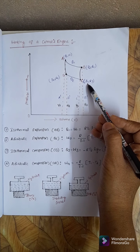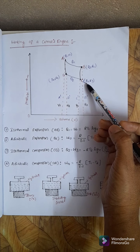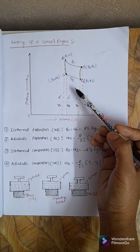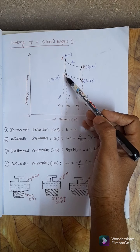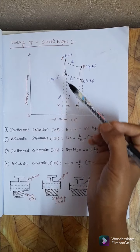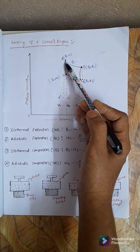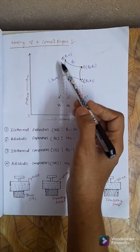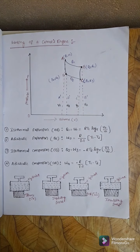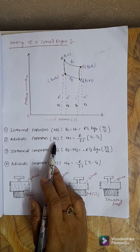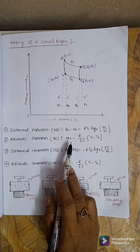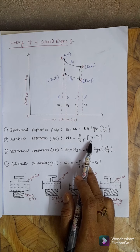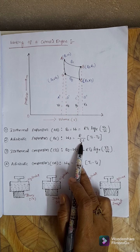Due to the decrease in pressure and temperature, the engine cannot do any further expansion, so it must be brought back to its original state via isothermal compression from C to D and adiabatic compression from D to A. The work done in adiabatic expansion from B to C is W2 = R/(γ−1) · (T1 − T2), since temperature falls from T1 to T2.